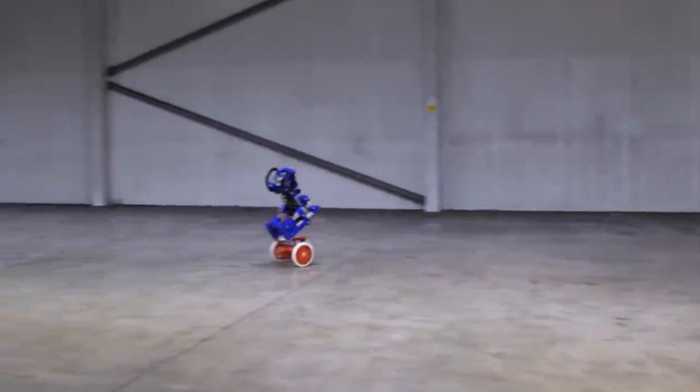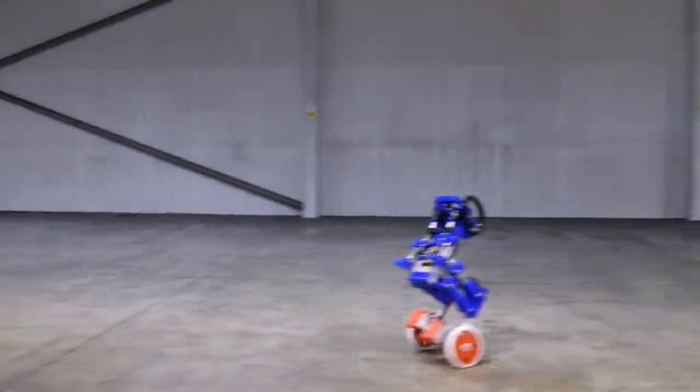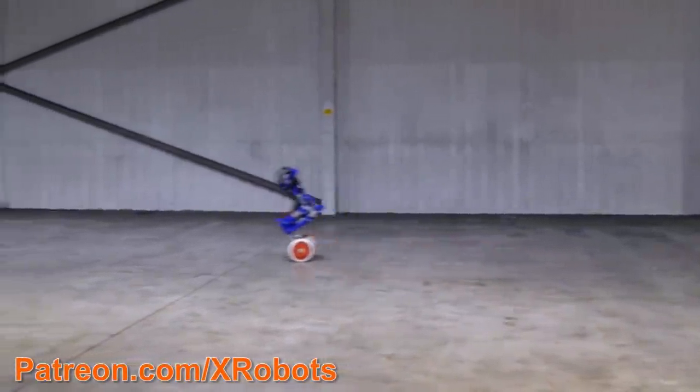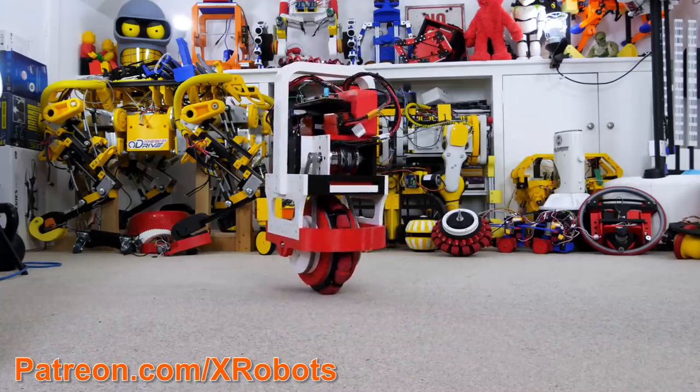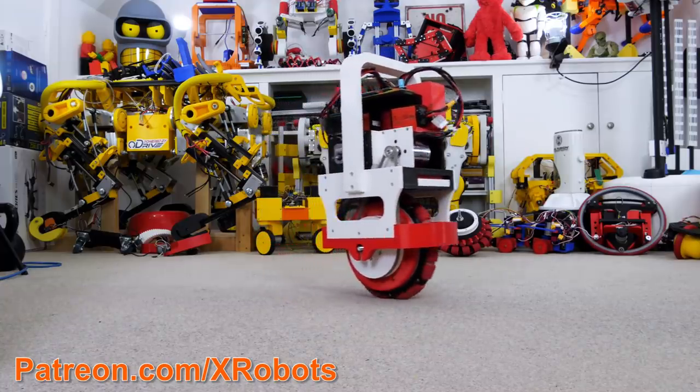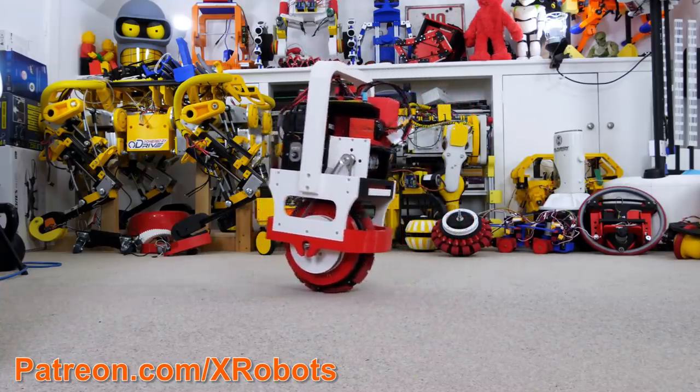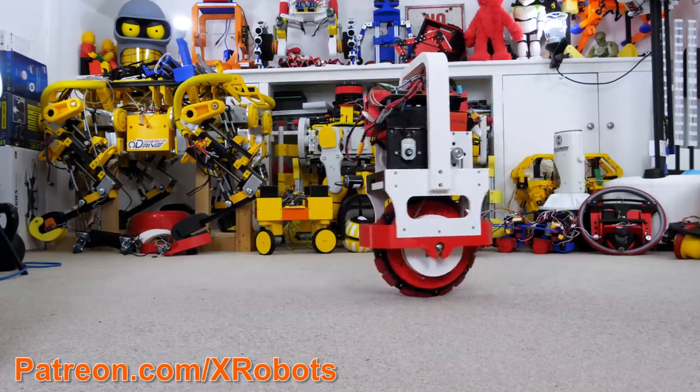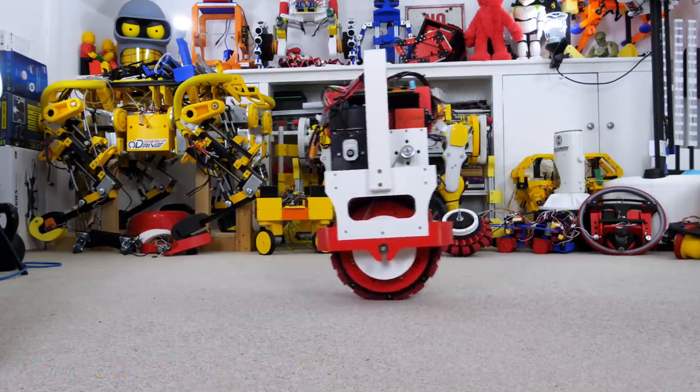I've built various balancing robots in the past. These include two-wheel balancing robots like my Sonic the Hedgehog robot and my one-wheel balancing robot which use an active two-axis omni-wheel to balance on a single point. These robots actively move in the direction they are falling in order to catch themselves and balance.